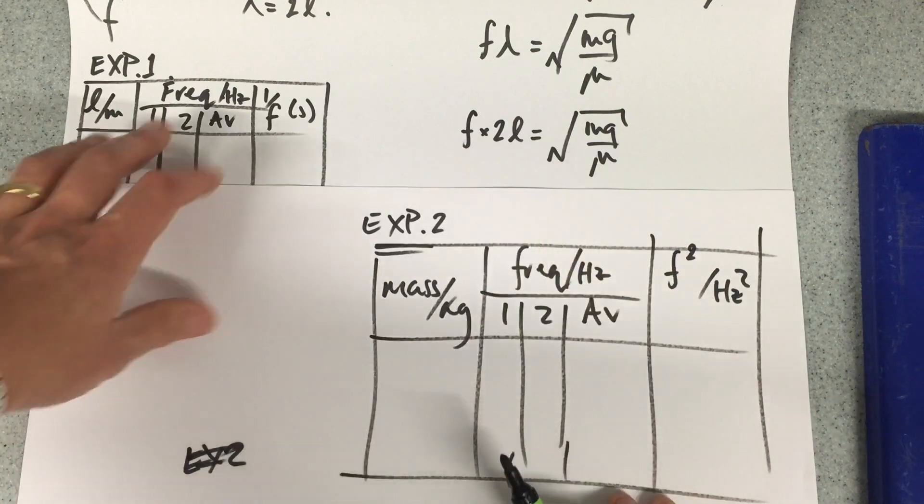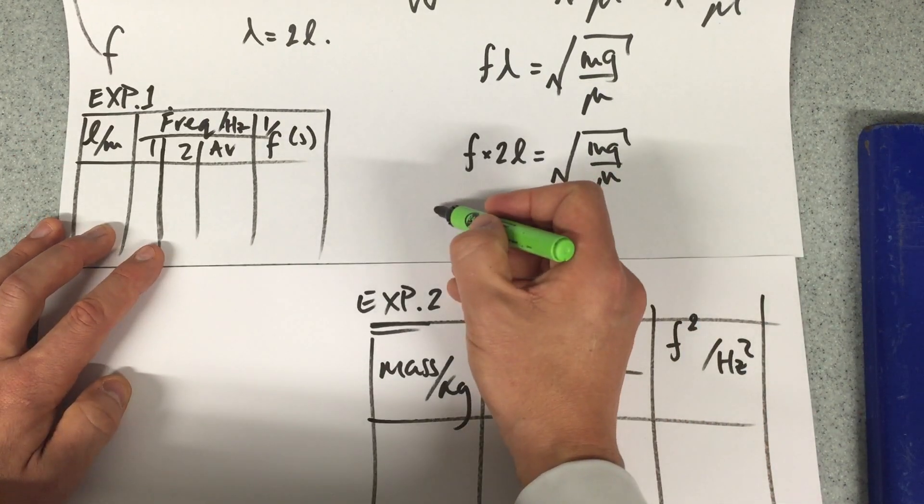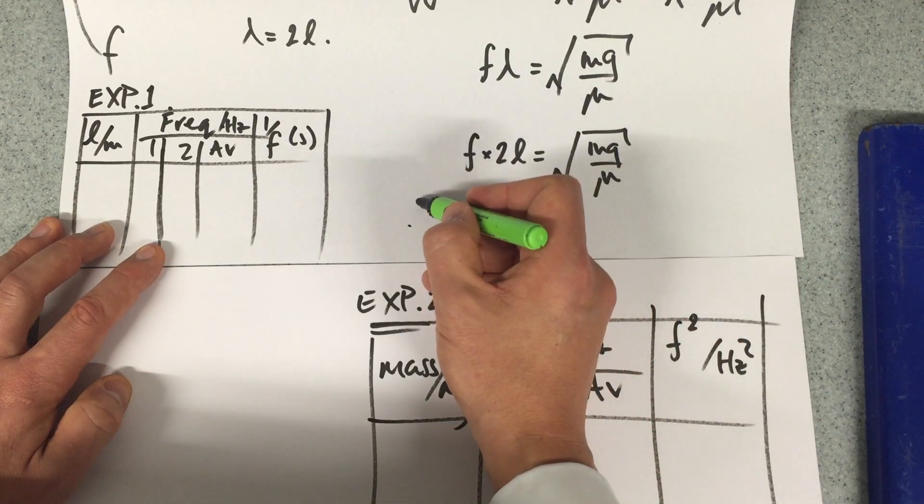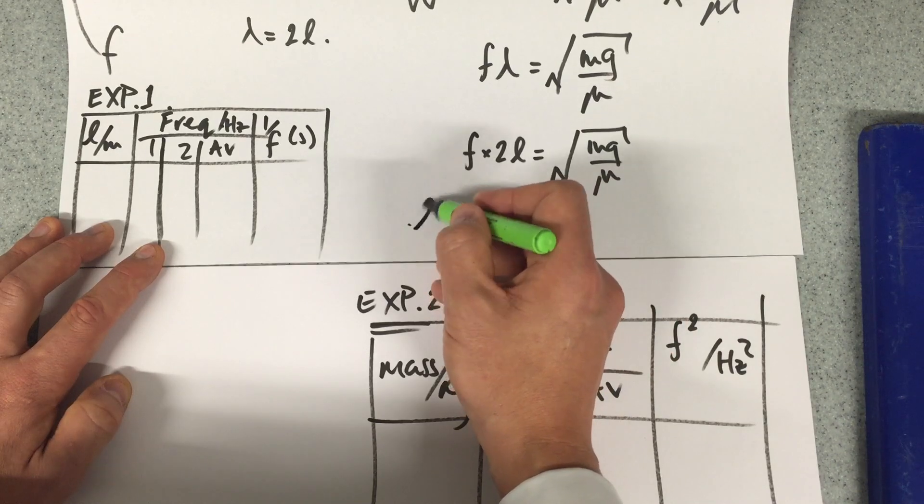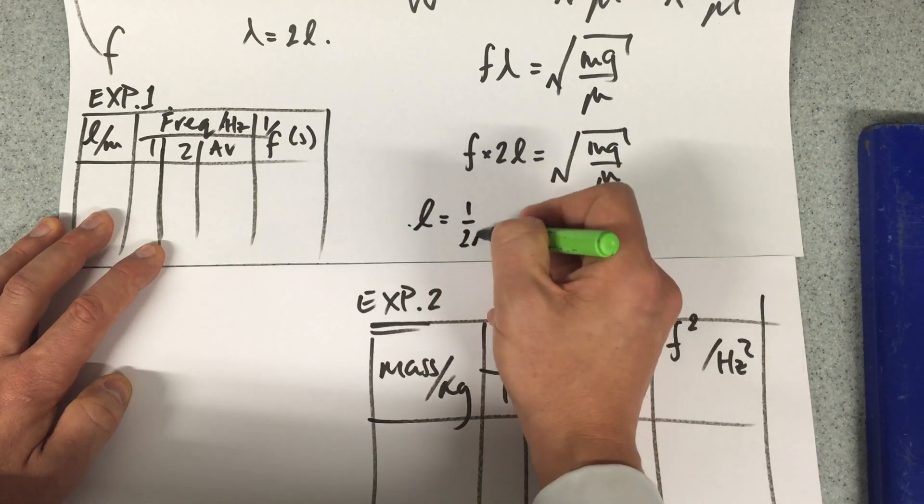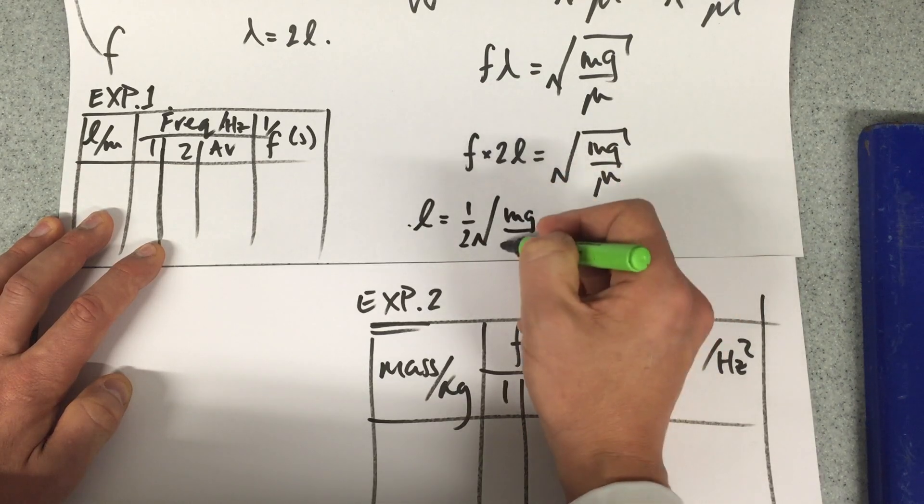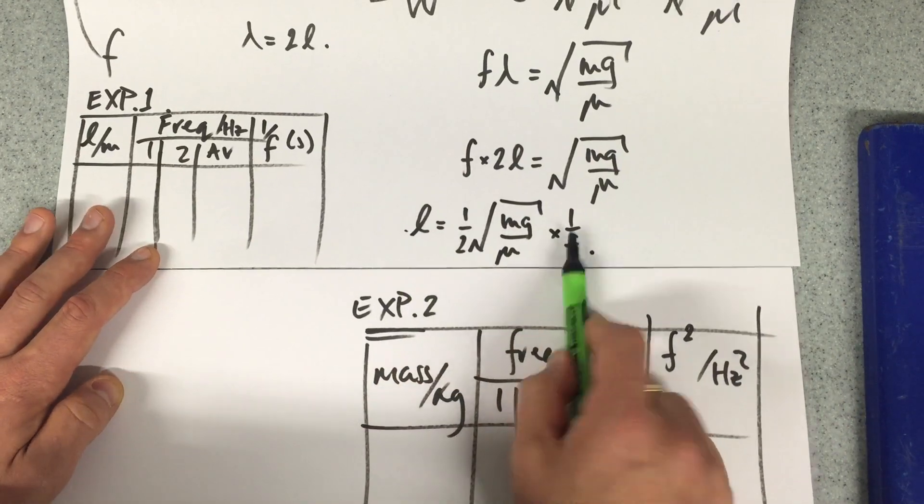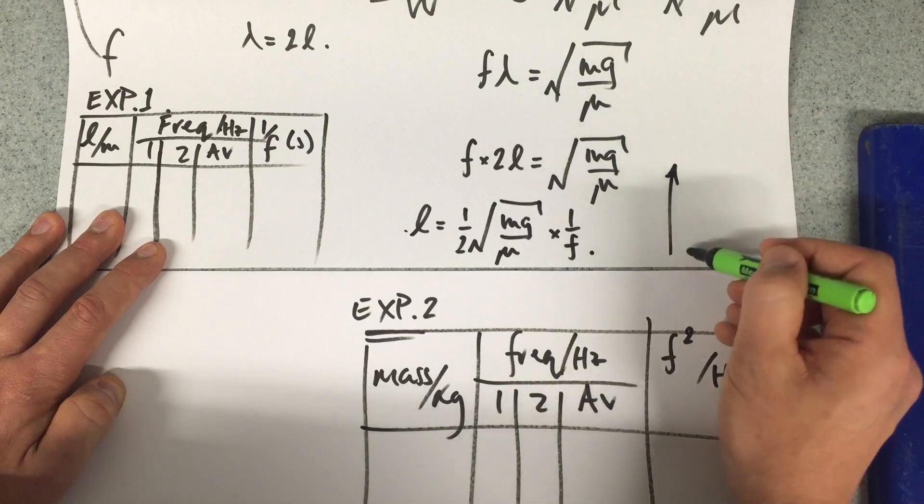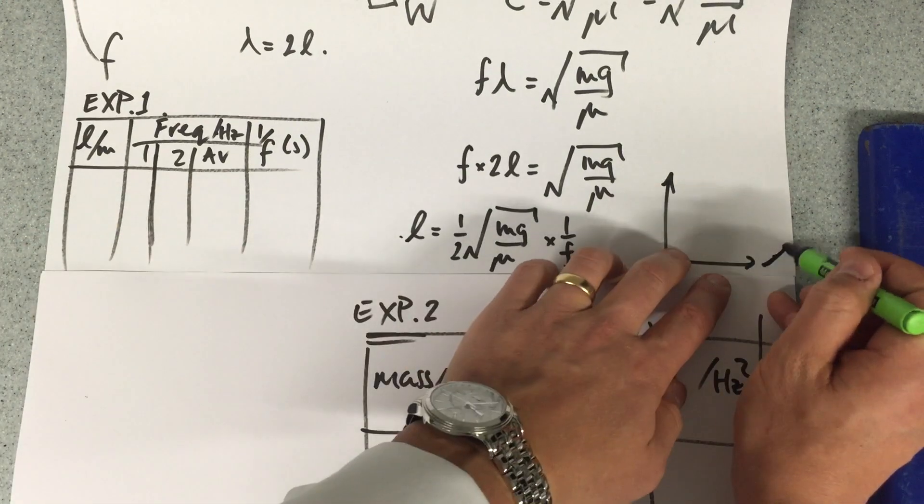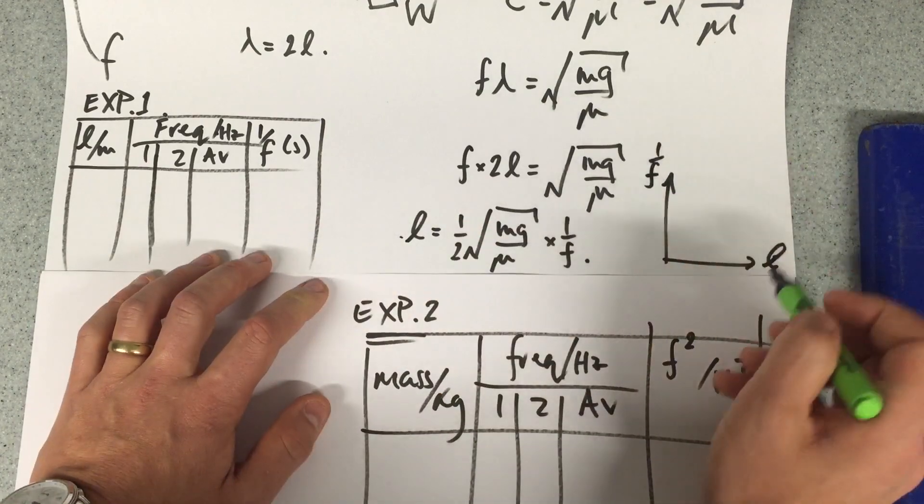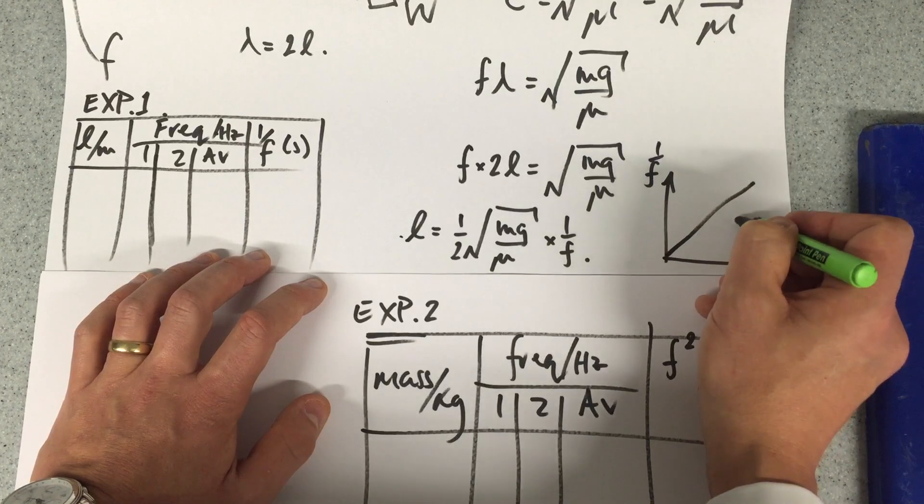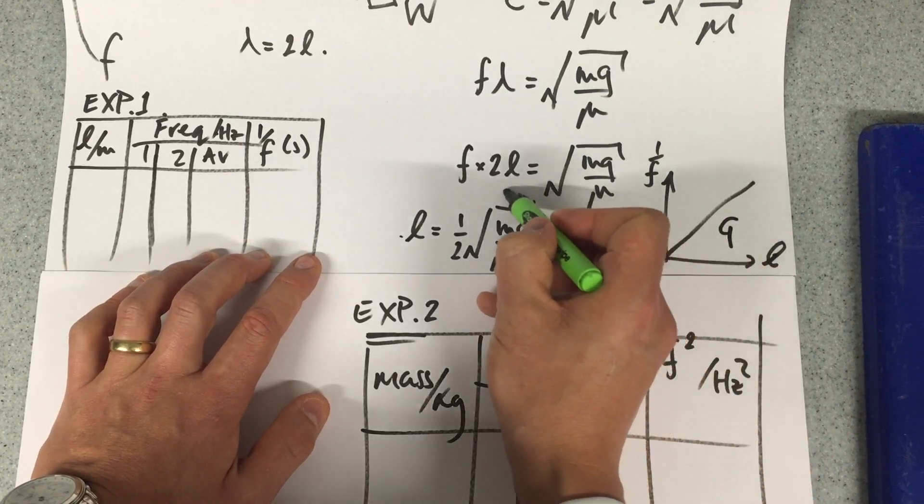Because where f and L are inversely proportional, if I'm looking for L as my independent variable, I could write this as L equals a half root mg over μ by 1 over f. So I could plot L against 1 over f. L is what I've changed, 1 over f is what I've measured, and I come out with a gradient. The gradient equals this.